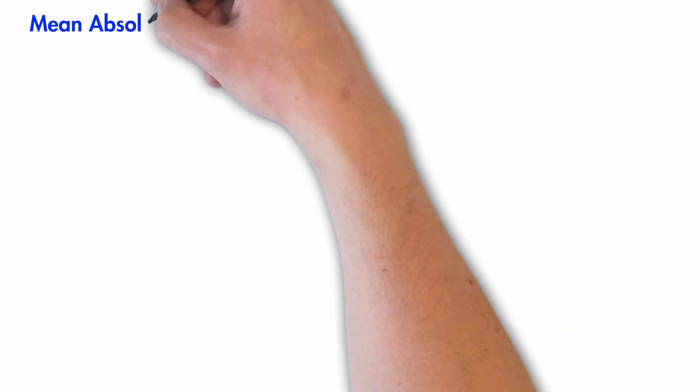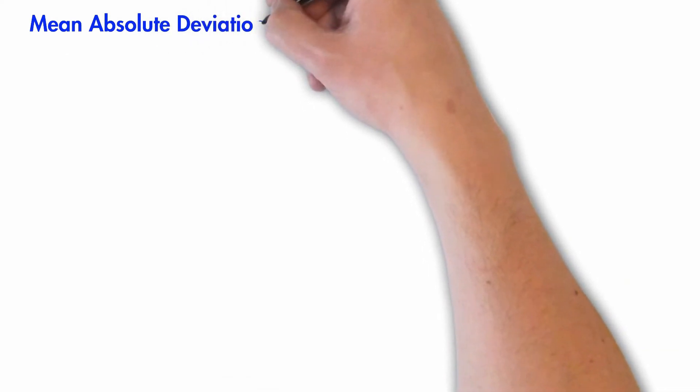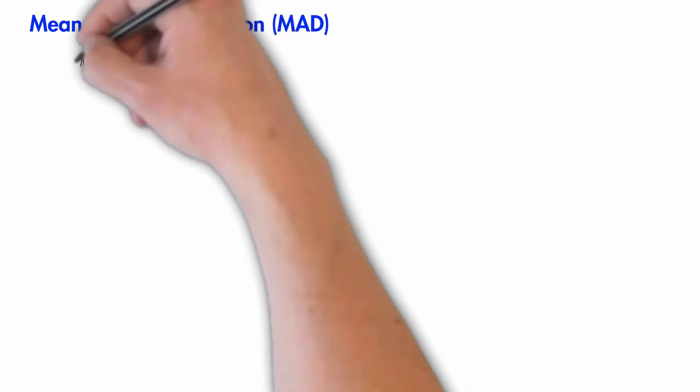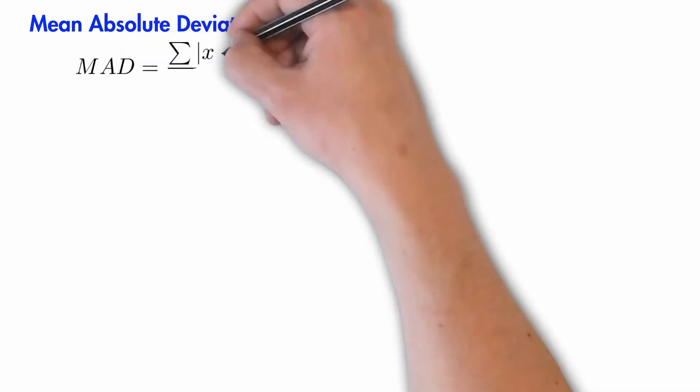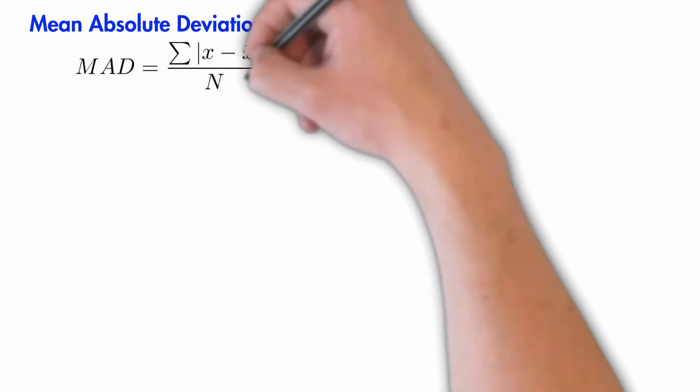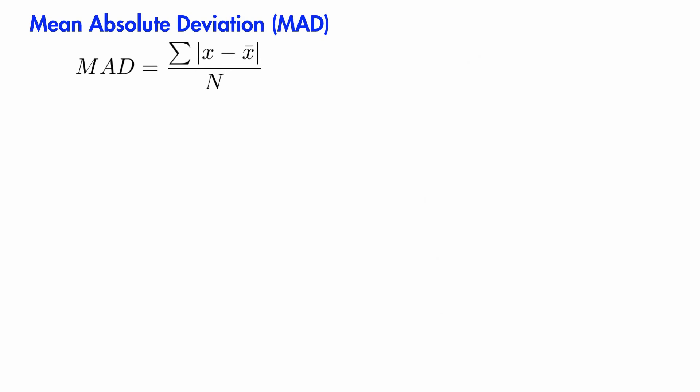Before we conclude we will get introduced to two more concepts. The first is mean absolute deviation or MAD, which is the mean of absolute deviations of the observations from their respective means. Here we take the absolute figure of the deviations from the mean. We do this by ignoring the sign of the numerical value before we take the summation so that they do not add up to zero.